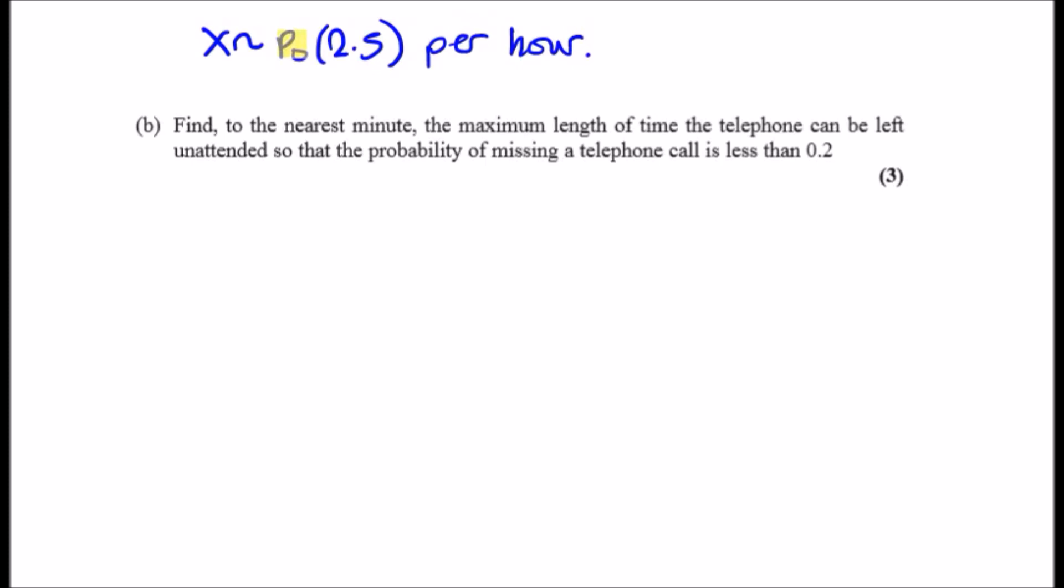Okay, here we go, part (b). Find to the nearest minute, okay so we change that to hours, minutes later, the maximum length of time that the telephone can be left unattended so that the probability of missing a telephone call is less than 0.2. So this is a bit funny because missing a telephone call, so it's actually a reverse statement. So the probability of leaving a call unattended is x equals zero, meaning no calls, but to miss a call would be the opposite, be one minus this terminology. So one minus not picking up the call, so this is going to be a higher probability, and all of this must be less than 0.2. So this would be our statement.